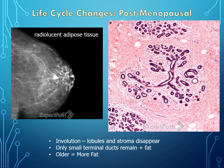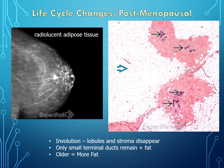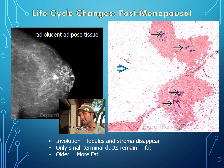In postmenopausal changes to the breast, we no longer have terminal ductal lobular units — basically just ducts, a minimal amount of stroma, and a lot of fat. As one gets older, one tends to acquire more fat. The good news is that when you have lots of fat, the breast becomes more radiolucent, which makes it easier to find cancer on mammography.